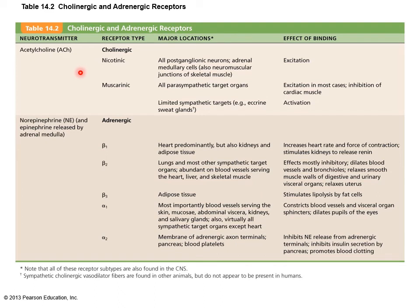Here's a breakdown of the receptor types. Cholinergic nicotinic receptors are found on all postganglionic neurons, adrenal medullary cells, and neuromuscular junctions on skeletal muscle — always excitatory. Muscarinic receptors are on all parasympathetic target organs — excitatory in most cases, but inhibitory on cardiac muscle. Adrenergic receptors include alpha and beta subtypes with various effects. Many medications are designed to target one or more of these receptors to reduce inflammation or produce specific clinical effects.